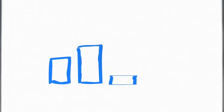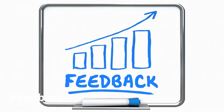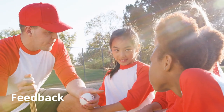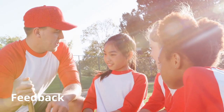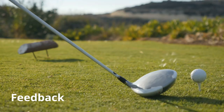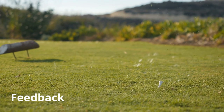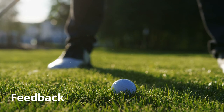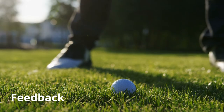The final stage of information processing is feedback. Feedback is information used during or after the response to aid movement correction. This can be received by yourself, known as intrinsic feedback, or by others, known as extrinsic feedback. A professional golfer will know if they have hit a good shot based on where the ball ends up. If the ball has gone in the wrong direction, they will automatically give feedback to themselves in order to alter the shot next time.